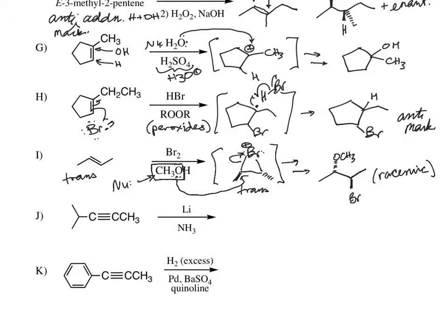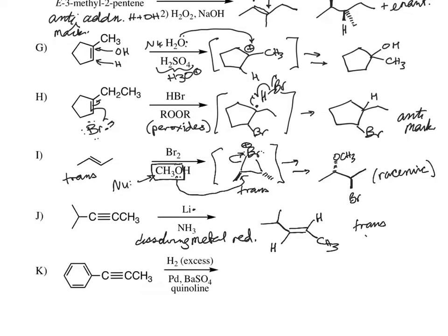Our last two examples are reduction reactions. Lithium in ammonia is described as the dissolving metal reduction. This involves electron transfer by lithium — lithium zero has a single valence electron, making it highly reactive and a very good reducing agent that wants to donate that electron. Ultimately it's going to result in a trans-alkene. The isopropyl and methyl groups are going to be trans to each other, and the hydrogens that are added are going to be trans as well — giving the trans-alkene from dissolving metal reduction of an alkyne.